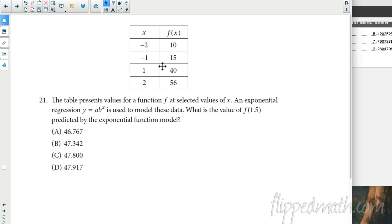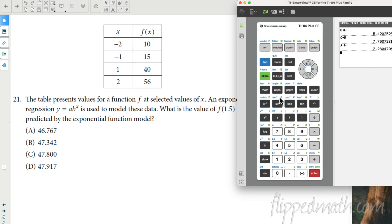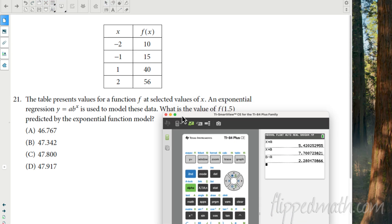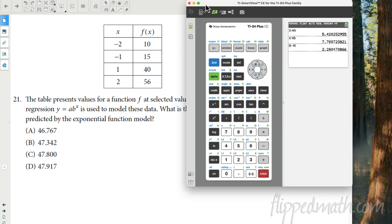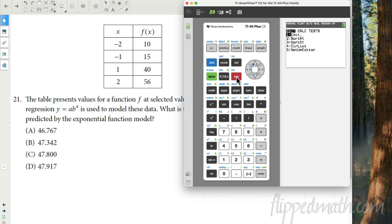So the next problem, we're on problem number 21 here. Let's get this all situated. They basically said the table presents values and exponential regression is used. What value f of 1.5 predicted by the model? Oh, well, we got to put this in our lists. So let's hit stat. Then we hit enter. Now let's put these in the list.